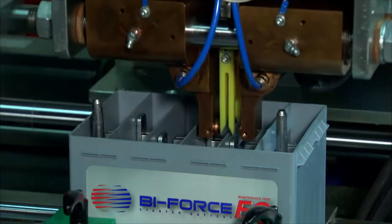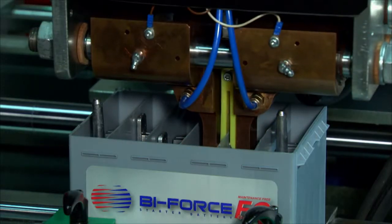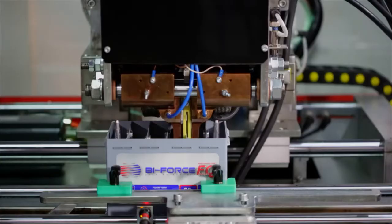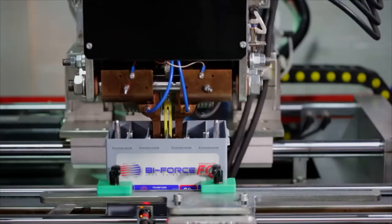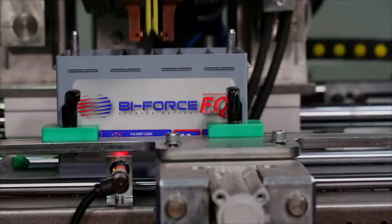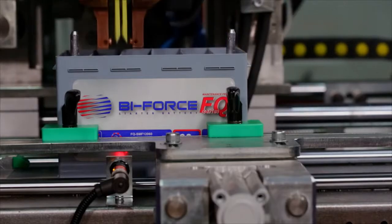Welding jaws are made from beryllium copper alloy with high conduction. In order to decrease energy loss, 36 kVA compact transformer is directly mounted on welding unit.